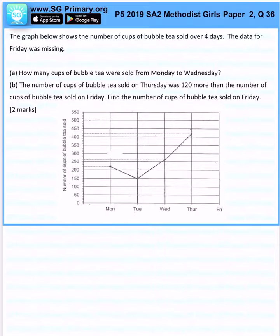Okay, so on Monday we know that there's 220 cups sold, Tuesday 150, Wednesday 260.